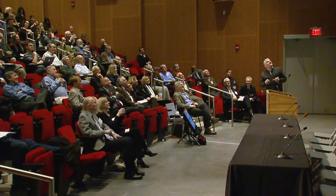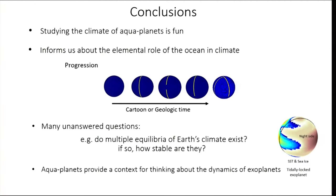Studying the climate of these aquaplanets is fun — I've become obsessed by it, and I'm now reluctant to put land into the system. It informs us about the elemental role of the ocean in climate. We can think of this progression as a cartoon of the climate — the essential things about the present climate being inter-hemispheric asymmetries and zonal asymmetries. We can also think about it as an evolution over geological time: as the plates move around the world, tectonics drives the land in this evolution.